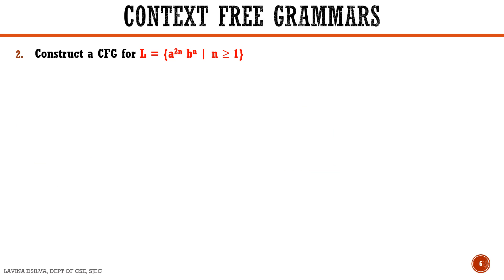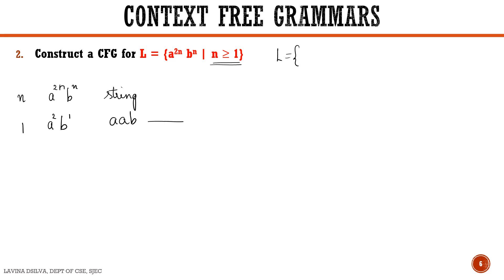We shall take the second example: constructing a CFG for the language a to the power 2n b to the power n where n is greater than or equal to 1. This is similar to the first example but the minimum string changes. When n is equal to 1, we have a to the power 2 b to the power 1, so we have two a's followed by a b — this is our minimum string.